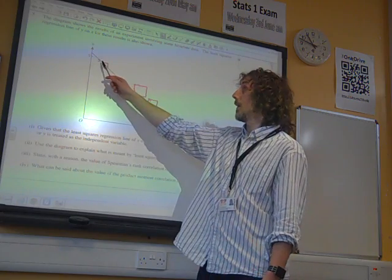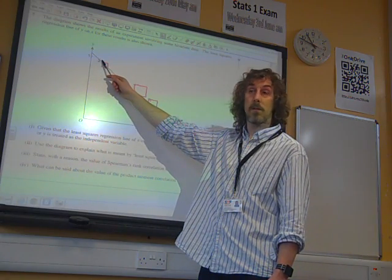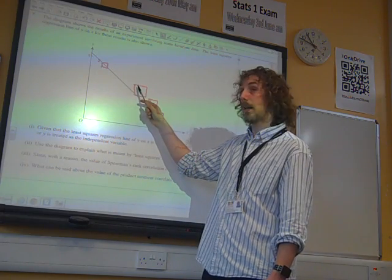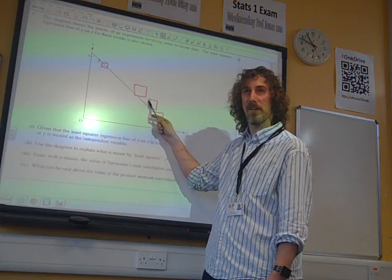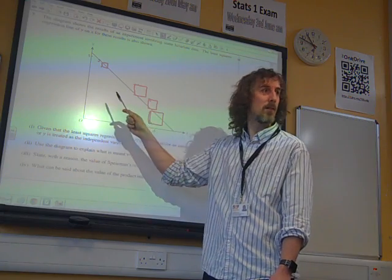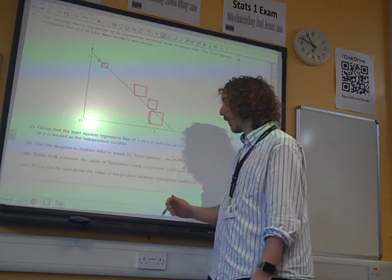So that's 1 and 5. That's 2 and 4. That's 3 and 3. That's which way we're doing it? And 4 and 2. And that's 5 and 1. Can you see that the rankings of x is opposite to the rankings of y?